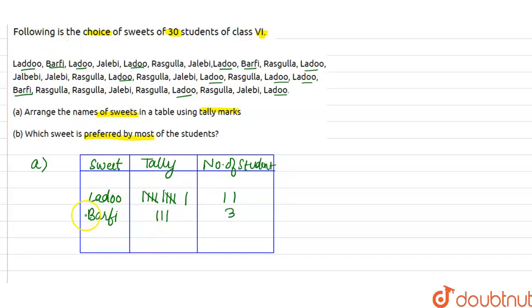Now third sweet is Jalebi. So how many students like Jalebi? Is one, two, three, four, then five, six, seven. So we can say frequency is seven. In tally marks, one, two, three, four, five, six, seven.